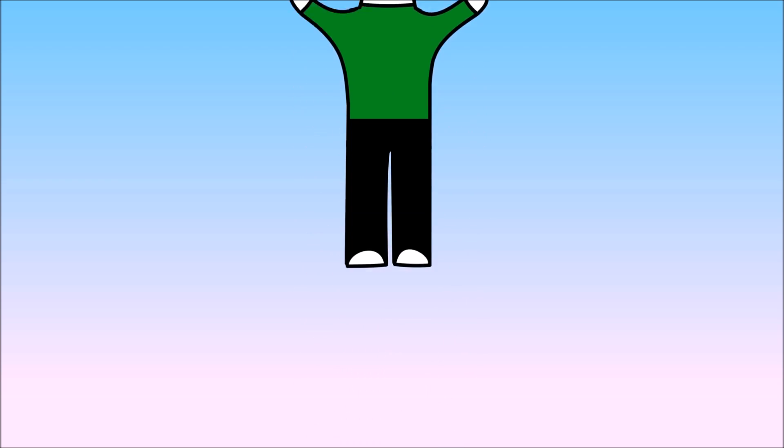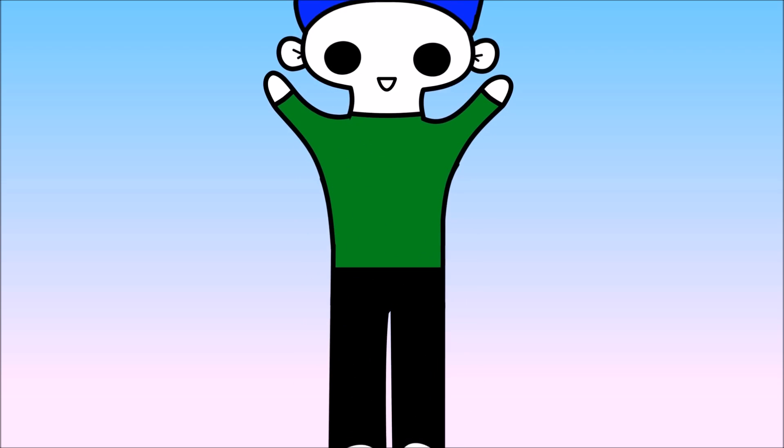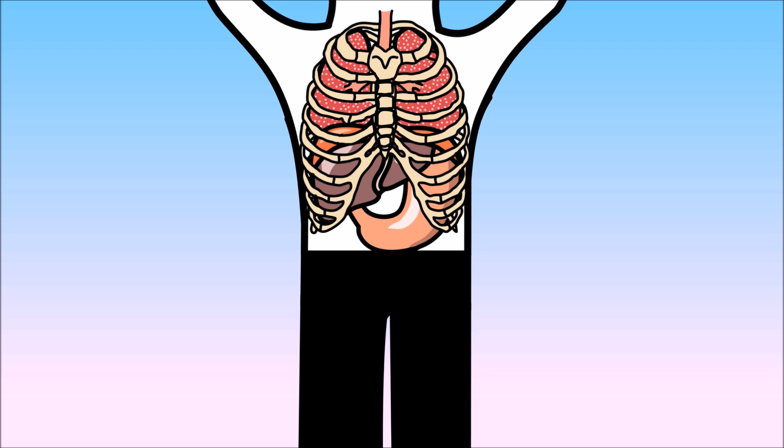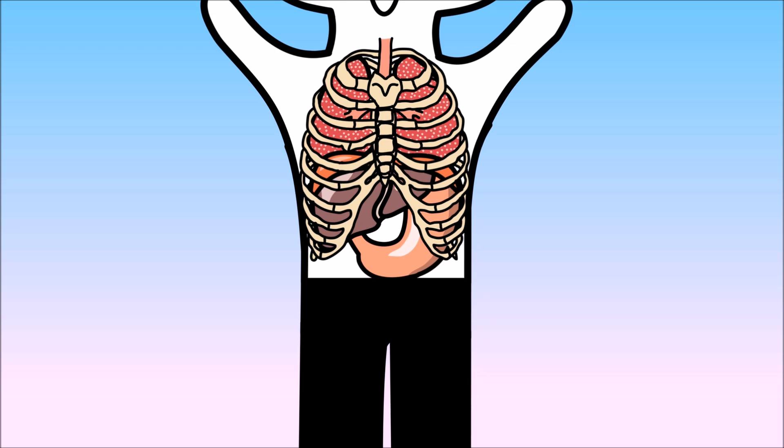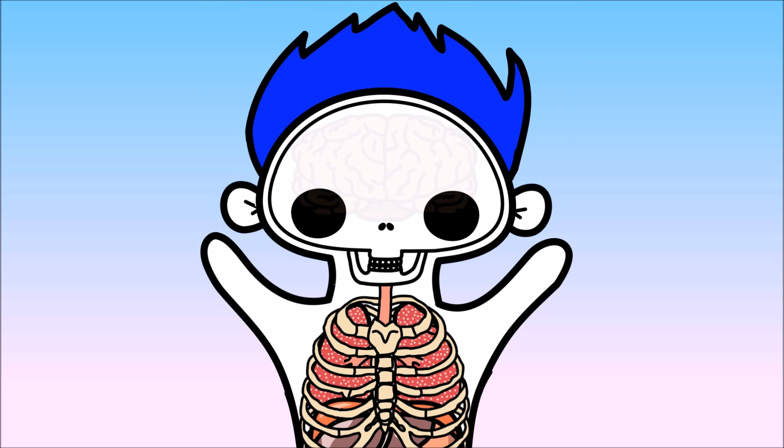Our bones not only help us move, but they also protect our internal organs! Our ribs are like a cage around our chest, and our skulls keep our brains safe!